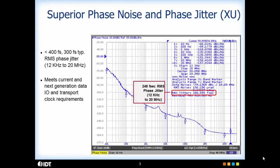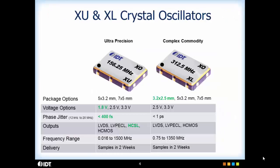While the XU has a max phase jitter spec of 400 femtoseconds, most standard frequencies are typically 300 femtoseconds, while the phase noise plot shown for 100 MHz is down to 248 femtoseconds. This allows the XU to not only meet current data I/O and transport clock requirements, but also positioning it for next generation systems that have a more stringent clock jitter requirement.